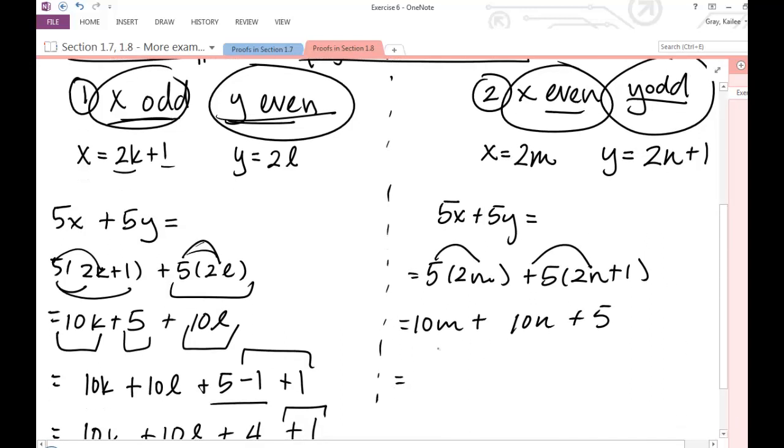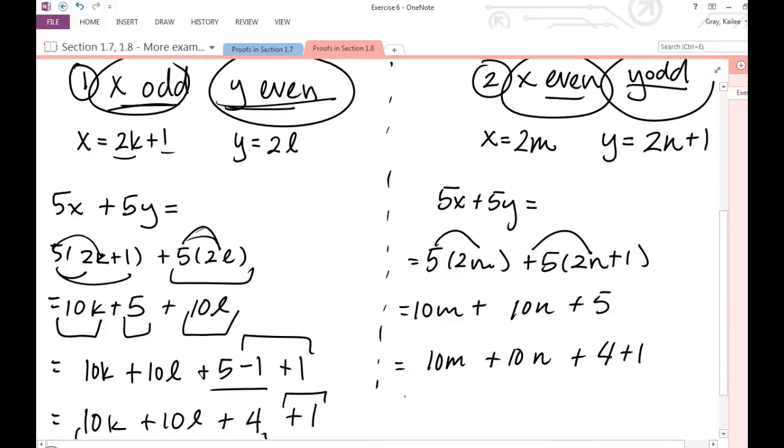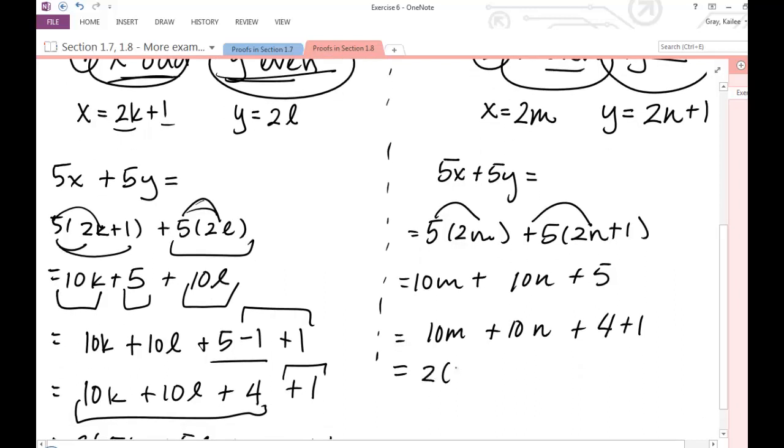Now, if you're ever unsure about without loss of generality, then I would veer towards the direction of not using it. It's safer to not use it and do more cases and make sure that your proof is concrete than to omit something that's important to your proof. So if you're not sure, just do all the cases.